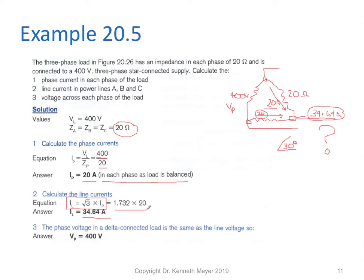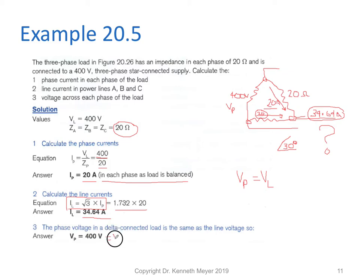The third step: the phase voltage in the Delta connection is the same as the line voltage. For delta, volts phase equals volts line. We were told that the line voltage was 400 volts, therefore it also has to be the phase voltage — 400 volts. So that's a quick example on calculating currents around a Delta load.